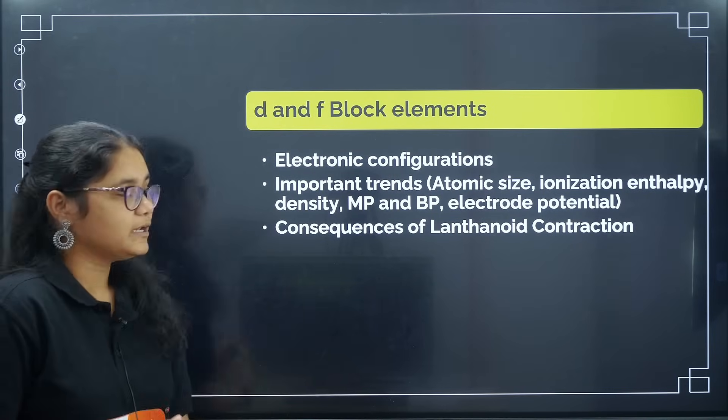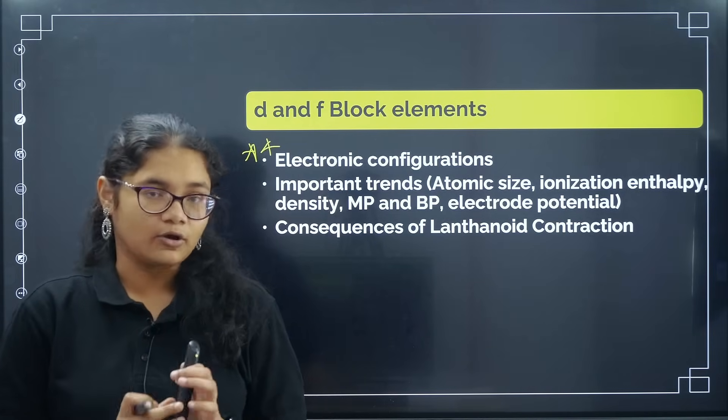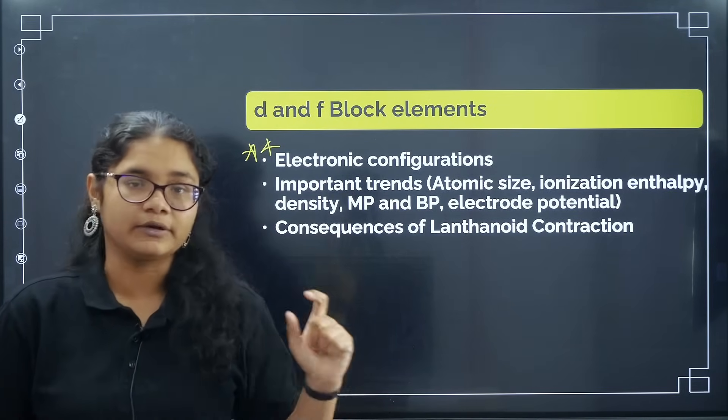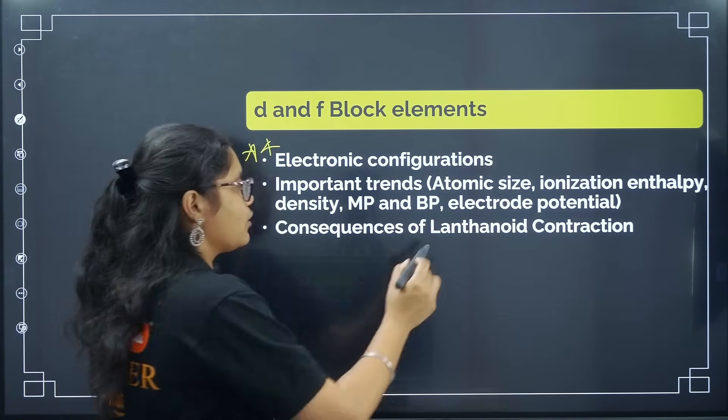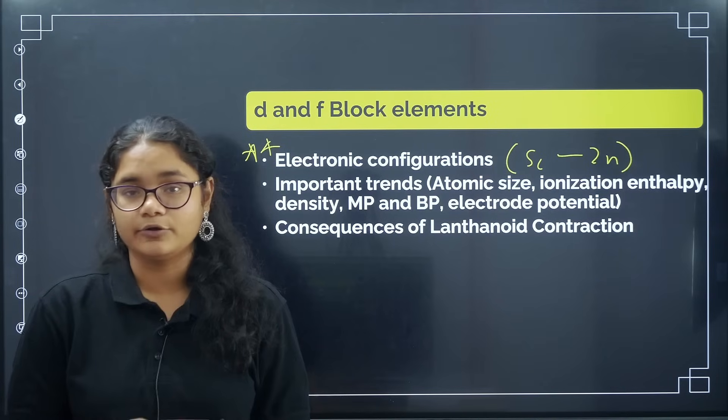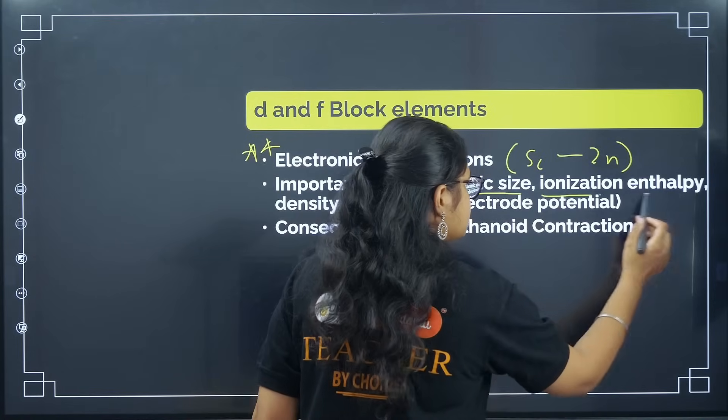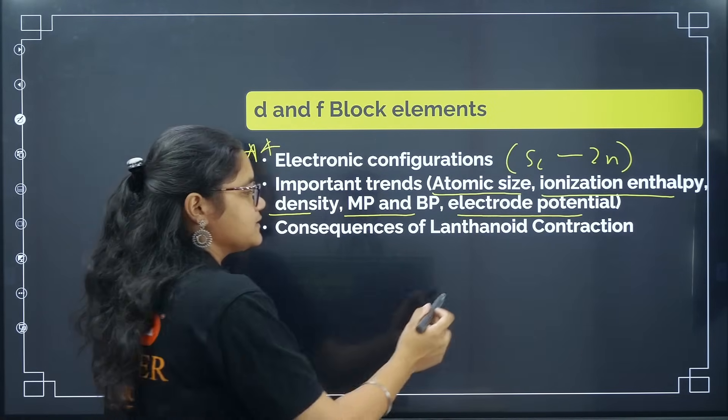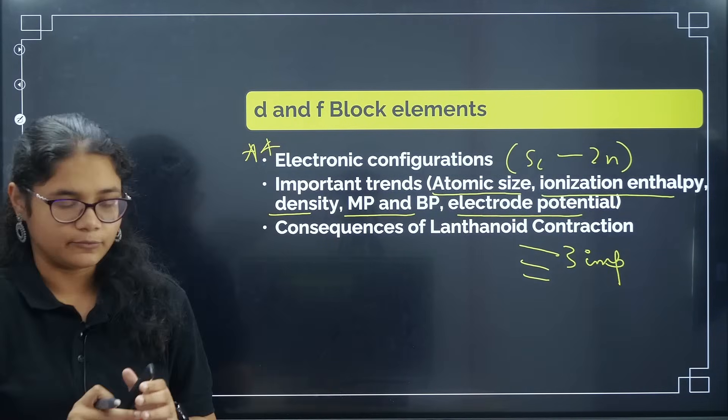Coming to D and F block elements, this is very mandatory. Without studying electronic configurations, you cannot do any questions from this chapter. Even if you haven't studied this, I'll recommend you have to read it. It will take hardly 5 to 10 minutes. With full focus, if you study, you can easily remember this. Electronic configuration from scandium to zinc - those who have not remembered till now, you must remember it today before going to the exam tomorrow. Next, important trends - revise atomic size, ionization enthalpy, density, melting point and boiling point and electrode potential. Consequences of lanthanide contraction - we have three important consequences, just try to revise them.